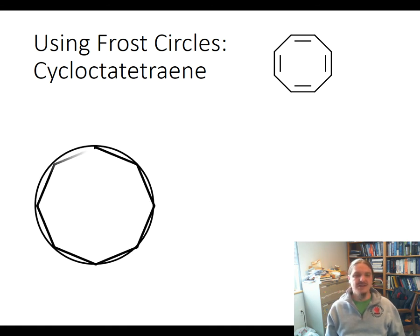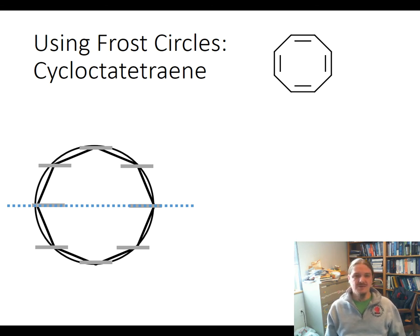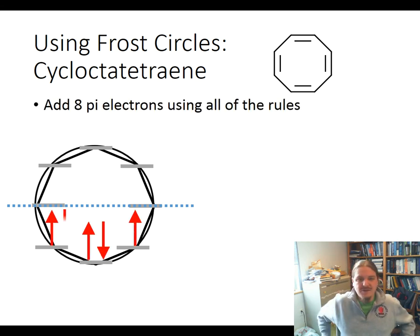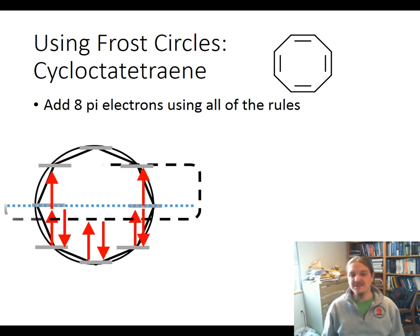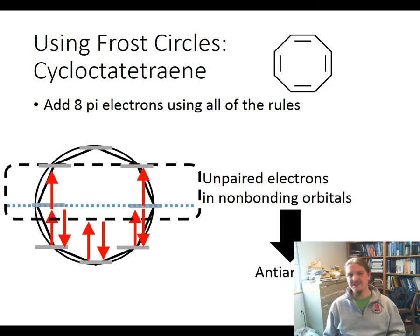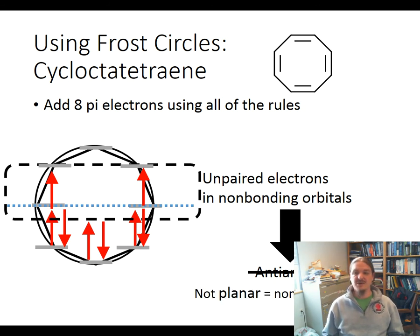Here comes cyclooctotetraene. Here's my octagon drawn in there — this is the largest frost circle I'm going to draw. Cyclooctotetraene has 8 pi electrons, and once again, filling them in shows unpaired electrons in non-bonding orbitals, which would suggest anti-aromaticity. Except we know it's not anti-aromatic — it's a stable compound that just behaves like an alkene. This molecule is big enough and flexible enough that it can twist out of planarity, so it's not planar, not conjugated, and therefore just non-aromatic.